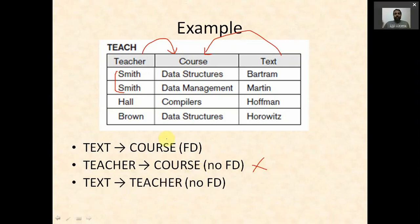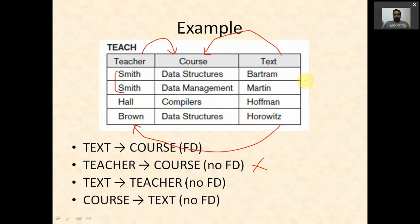For Text → Teacher, there appears to be a functional dependency in this particular instance, but that would not generally hold. For Course → Text, there is no functional dependency because two rows have the same value 'data structures' for course but different text values. So text is not functionally dependent on course.